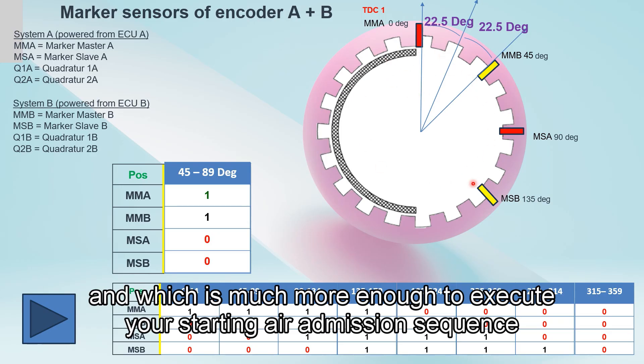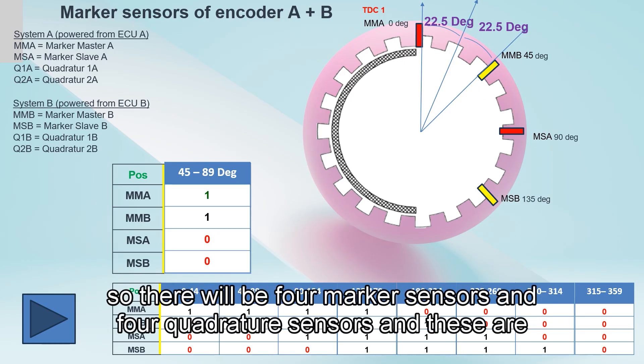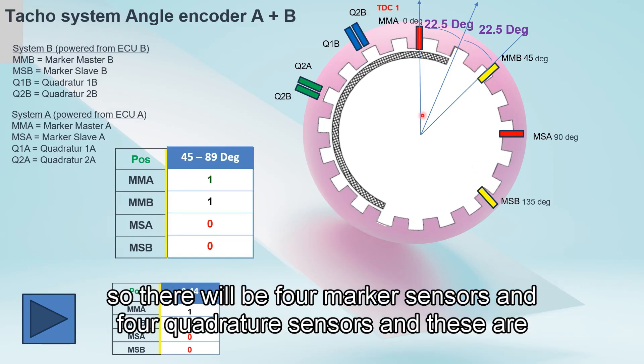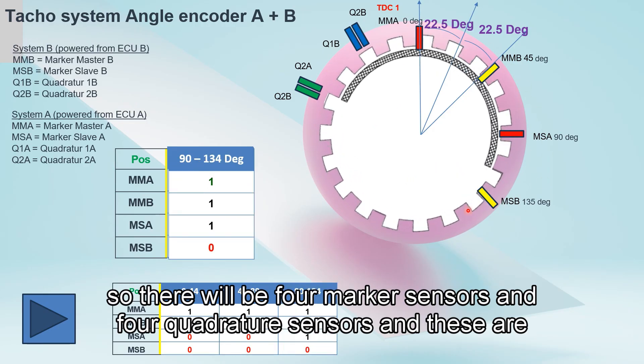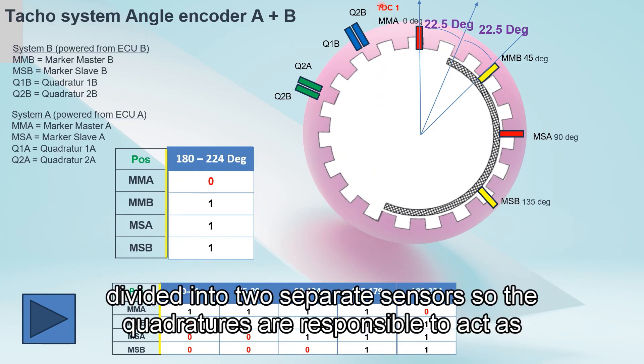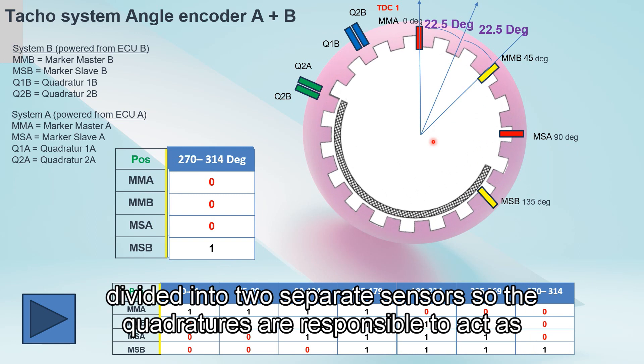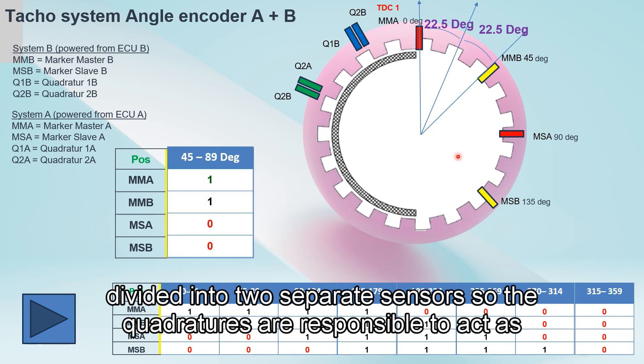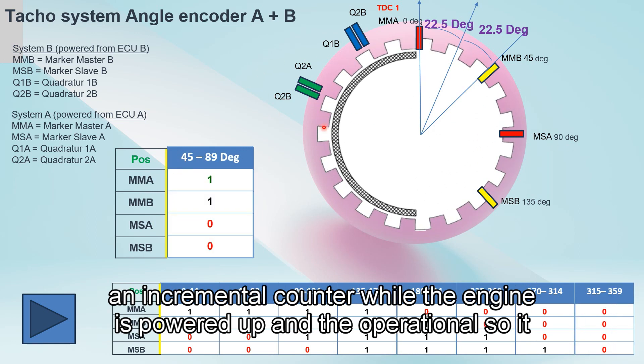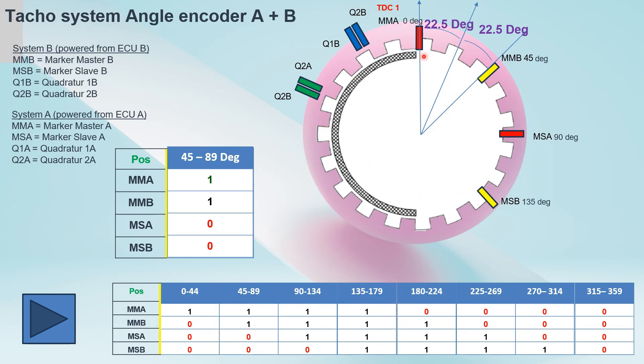There will be four marker sensors and four quadrature sensors, and these are divided into two separate sensors. So the quadratures are responsible to act as incremental counter while the engine is powered up and operational, so it will use the exact position to accuracy of one degree.